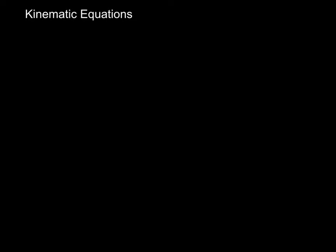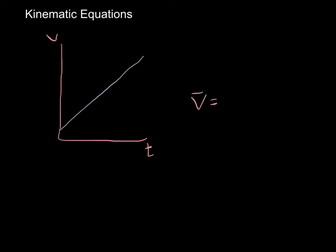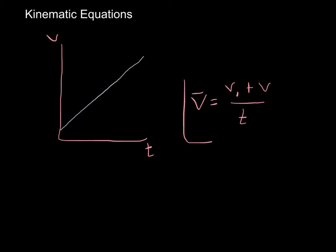Our second kinematic equation comes from thinking about how average velocity works with constant acceleration. If I'm traveling at a constant acceleration, velocity versus time gives a straight line with constant slope. To find average velocity at any given point, we can do a mathematical average: initial velocity plus final velocity divided by 2. If I know how fast I started, how fast I ended, and how long I accelerated, I can find my average velocity. This is the second of our four kinematic equations.